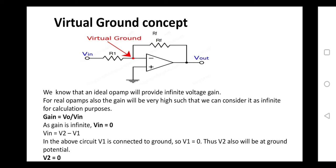Before going to inverting and non-inverting amplifiers, we must understand the concept of virtual ground. Looking at the figure of an inverting op-amp — it is called inverting because the input voltage Vin is applied to the inverting terminal (negative terminal) while the other terminal is grounded. As the output is fed back to the input, it is called a closed loop configuration, and the op-amp provides infinite voltage gain.